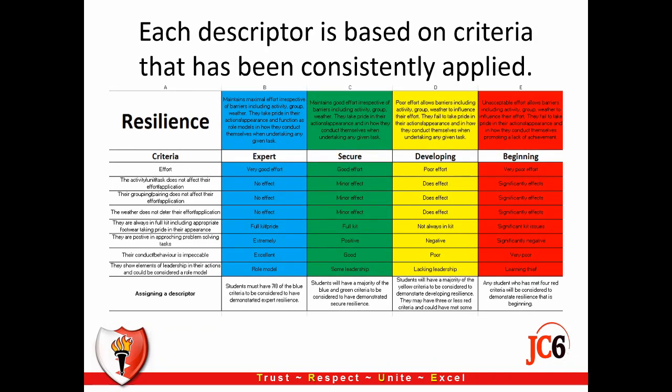Each descriptor has been broken down into a specified set of criteria that can be consistently applied. For example, for resilience, the statements running left to right show how expert, secure, developing and beginning have been subdivided into criteria which staff use to assess in lessons when assigning the descriptor for the assessment point. Each department has criteria for each of the 30 statements, meaning they are consistently applied and justifications for any grading can be given during a parents' evening.